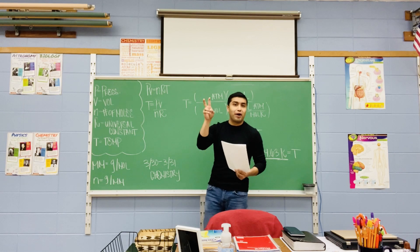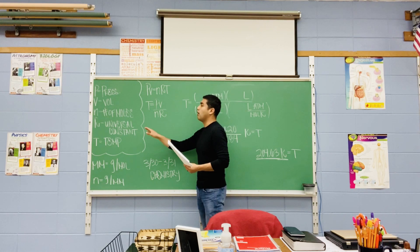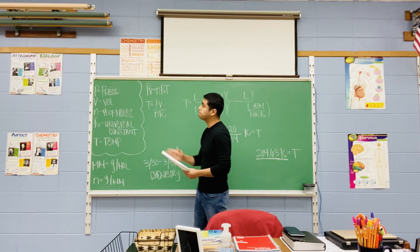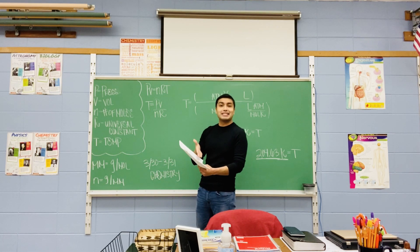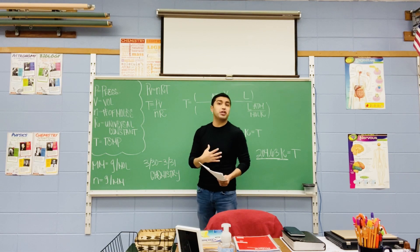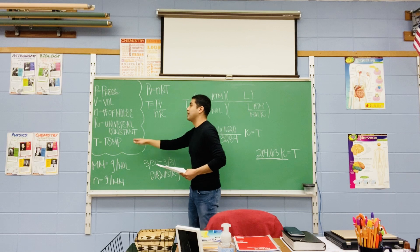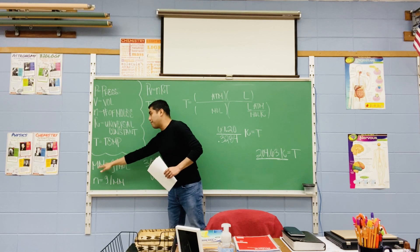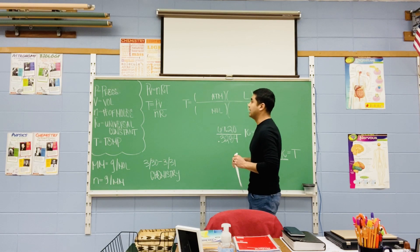The more difficult part about learning which R constant to use is based on which unit of pressure you're using. We'll discuss that later on. So P is for pressure, V is for volume, N is for number of moles, R is a constant given to you, and T is for temperature. Remember the units for pressure, volume, and temperature from a previous video. Volume is always liters, and temperature is always in kelvins. Also, MM is molar mass — grams per mole. If you're solving for N, that's grams over molar mass.